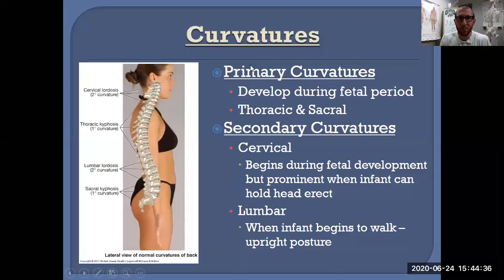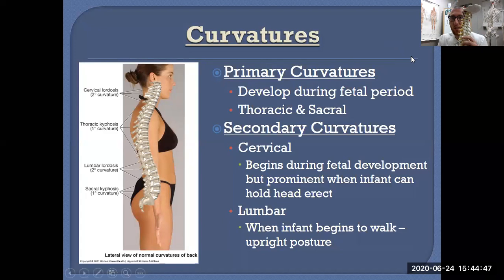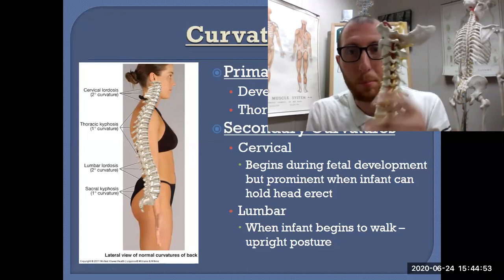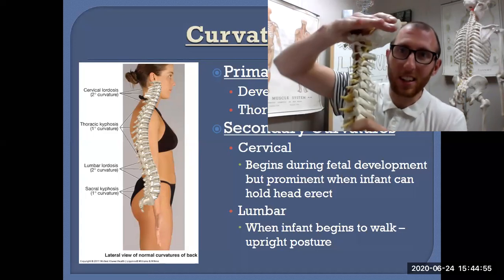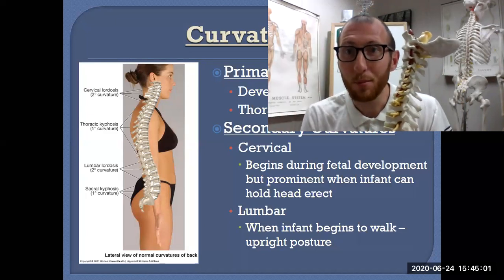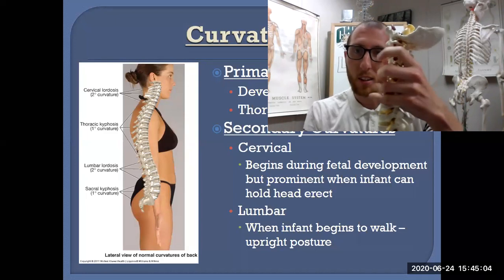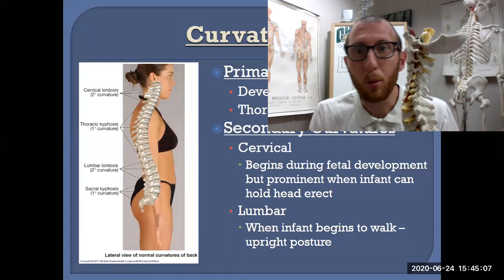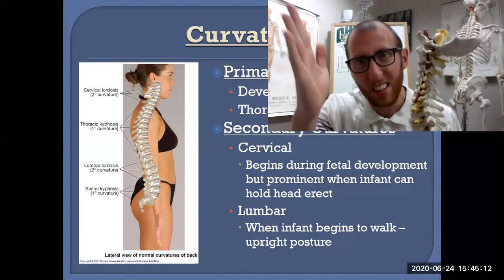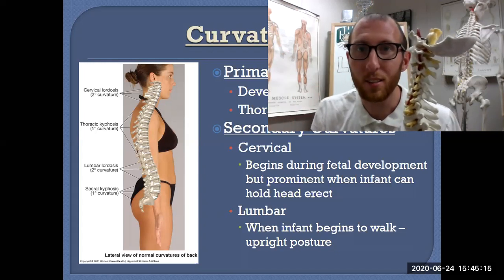Let's dive into the curvatures of the vertebral column — and actually, it's not straight. If it were straight, that would be an issue. One main reason is that if you put force down through a straight column, it takes more force straight through. But if it's curved, there's a little more dissipation side to side, so the curvature actually helps in dissipating force.